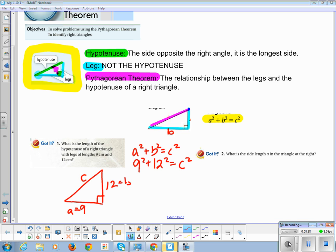9 squared is 81. 12 squared is 144. C squared is C squared. 81 and 144 is 225. And you guys, we've been doing solving quadratics. What do we last mean? So I'm going to take the square root of both sides. Square root of 225 is 15. Square root of C squared is C. And we know that C is equal to 15.